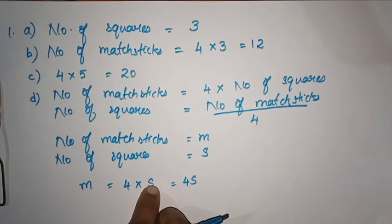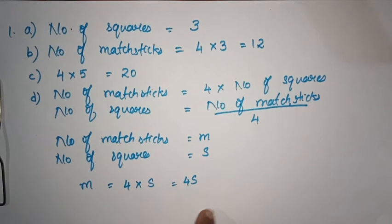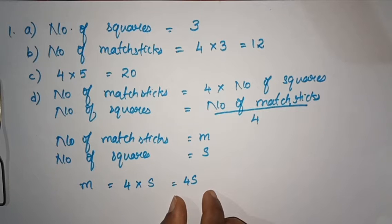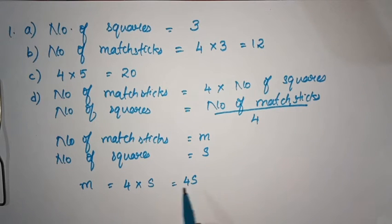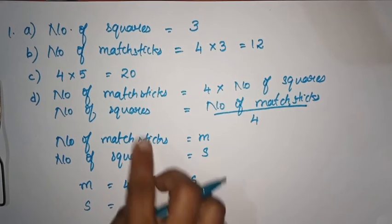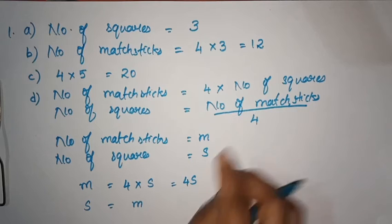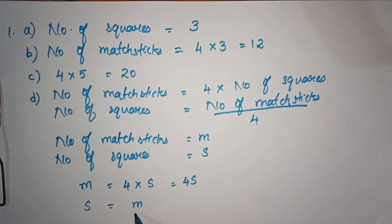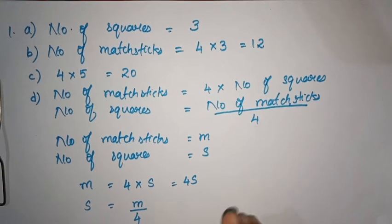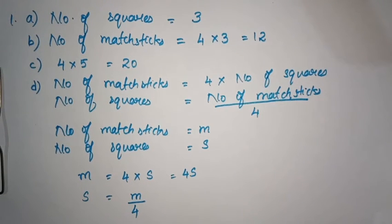We will write the number of m. If you want to write the number of squares, which is m by 4 — that is, s = m ÷ 4. If you want to write the number of matchsticks, we will write the number of matchsticks.